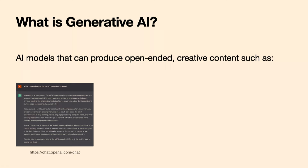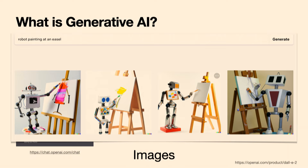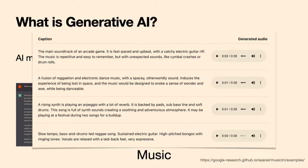We talk a lot about text — this is asking ChatGPT to make an announcement for this summit and it does quite a nice job. We're also talking about image generation, a really popular use case. I tried to make a logo for this summit and it did quite a bad job — very generic — so some jobs are safe. But something like a robot painting at an easel, it produces pretty nice images with quite a bit of variety. There's also music generation.